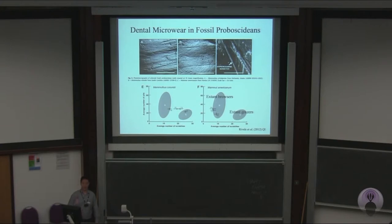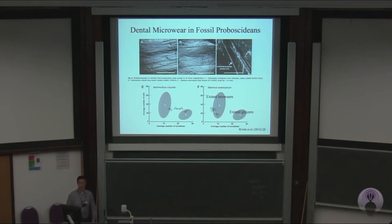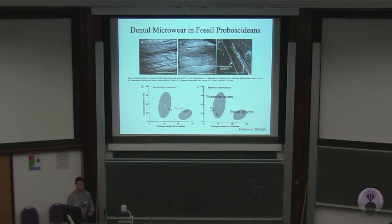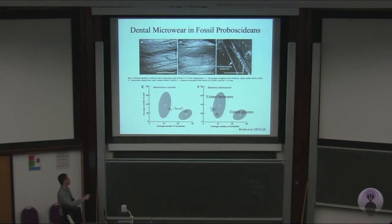Grazing is a much more abrasive diet in terms of the teeth, resulting in food-on-tooth wear, which creates scratches. As shown on this plot by Rivals et al., you count the number of pits and scratches from a large number of extant ungulates and elephants to determine a morphospace of extant browsers, grazers, and mixed feeders — a bivariate plot of pits versus scratches. They've done so on North American proboscideans: the evidence supports the Lophodont Columbian mammoth as a mixed feeder, whereas the American mastodon, a much more bunodont species, is largely a browser.